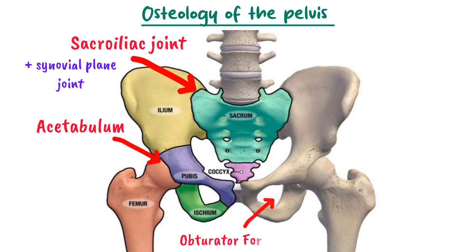The third landmark is the obturator foramen, a large opening in the pelvis. The word 'obturator' comes from Latin meaning 'to block or to stop,' because the foramen is mostly covered by the obturator membrane, leaving just a small space called the obturator canal for the obturator nerve, arteries, and veins to pass through.